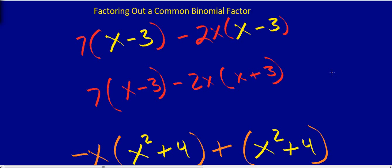Welcome to this presentation on factoring out a common binomial factor. Sometimes the greatest common factor of a term is a binomial, and this greatest common factor is called your binomial factor. You can factor this binomial factor out just like you could a monomial factor.